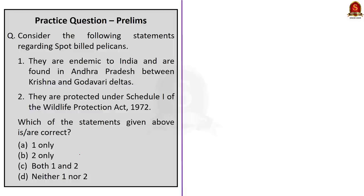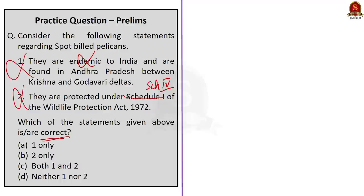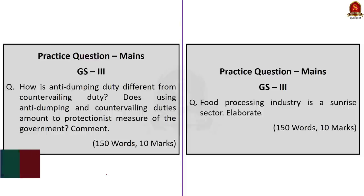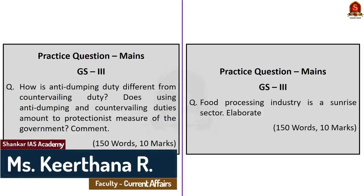Third question on spot-billed pelicans: Statement 1 — they are endemic to India and found in Andhra Pradesh between the Krishna and Godavari deltas — is incorrect, as they are not endemic to India; they are found in Sri Lanka, southeastern India, and Cambodia. Statement 2 — they are protected under Schedule 1 of the Wildlife Protection Act of 1972 — is also incorrect; they are protected under Schedule 4 of the WPA. Since both statements are incorrect, the correct answer is option D (neither one nor two).